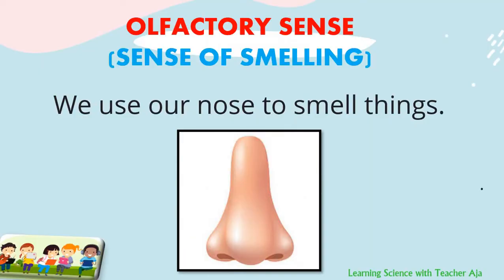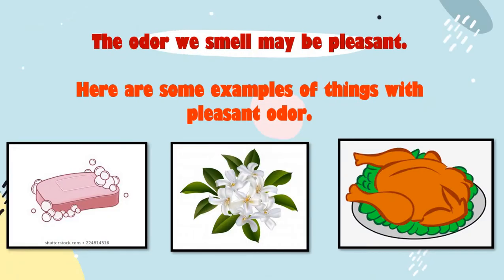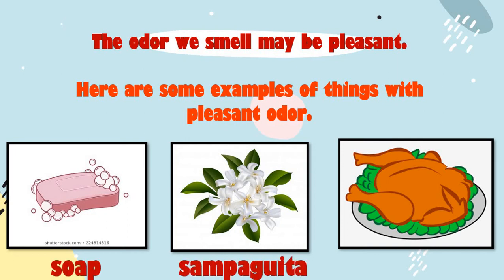The second sense is called olfactory sense, or the sense of smelling. We use our nose to smell things. The odor we smell may be pleasant. Here are some examples of things with pleasant odor. The first one is a soap. The second one is sampaguita flower. And the third one is freshly cooked fried chicken.